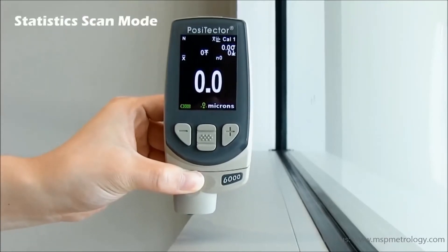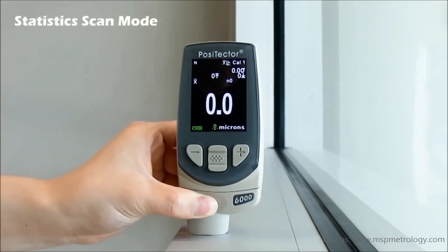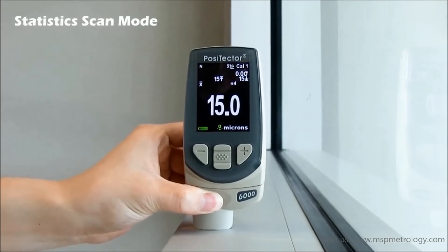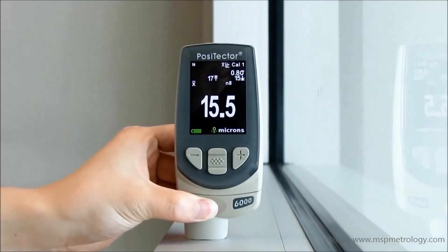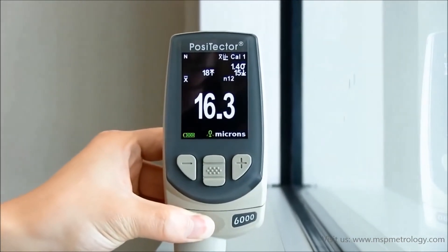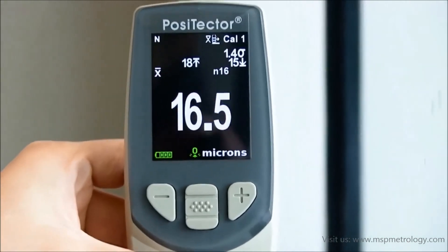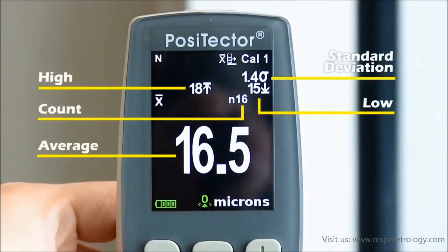In statistics scan mode, a running average is displayed on the screen while taking readings, in addition to the minimum, maximum, and standard deviation values. When memory mode is enabled, these five parameters are saved after each scan without saving the individual readings.